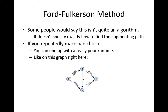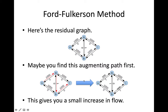Ford-Fulkerson is sometimes called a method rather than an algorithm, because it doesn't specify how to find augmenting paths. If you leave it up to arbitrary choice, you could make really dumb choices. The graph at the bottom shows something that can exhibit really poor runtime if you choose bad augmenting paths. Just looking at it as a human, the maximum flow must be 2000 — you'd use all available capacity on the high-capacity edges — but a bad algorithm might not see that.